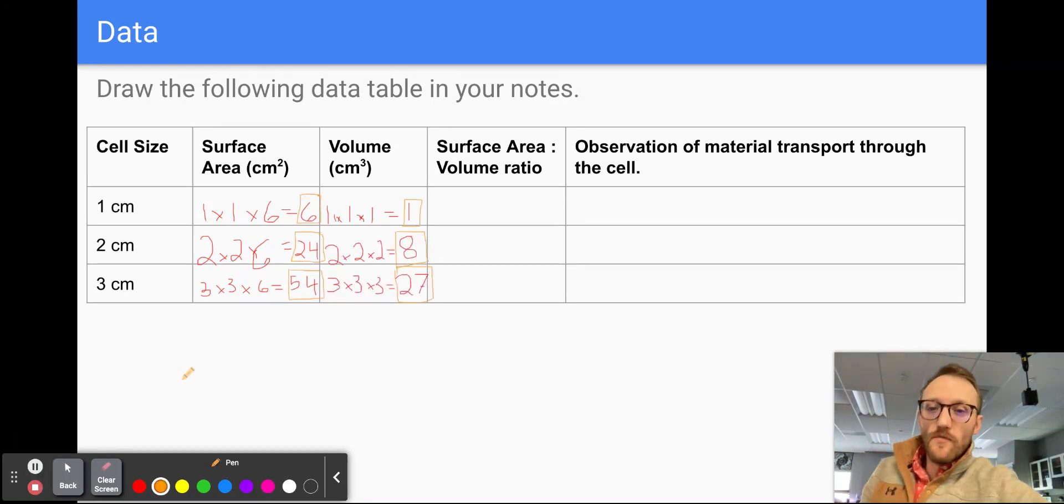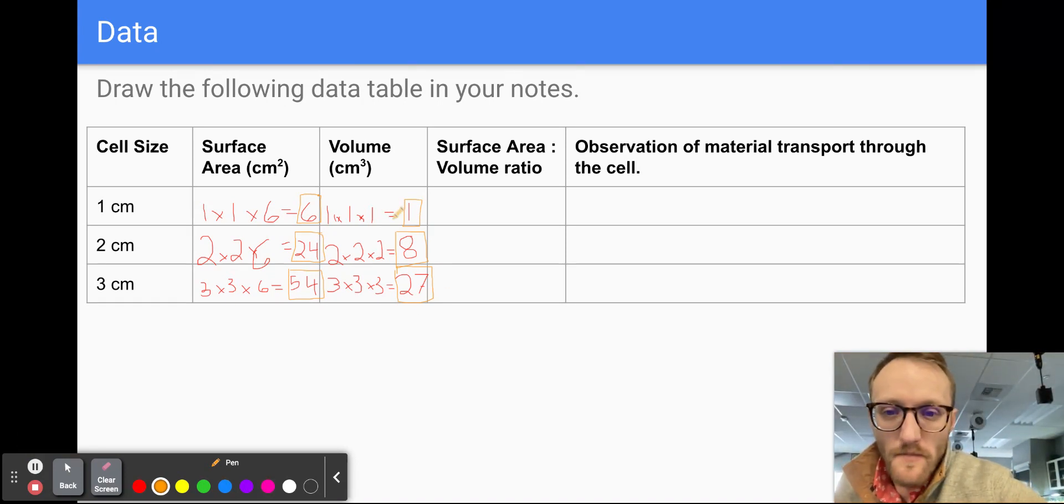So hopefully you were able to do those pretty simple math here. So now we should see that we have a volume of eight cubic centimeters and the volume of 27 cubic centimeters. Now, the big thing that we want to focus on now, though, is the surface area to volume ratio. All that is when we're doing a ratio is it's a simple division problem. So we're taking our surface area and we're going to divide it by our volume. So we're going to take six and we're going to divide that by one. And anything divided by one stays the same. So six divided by one is six.